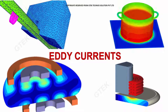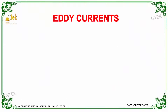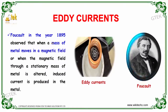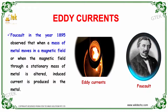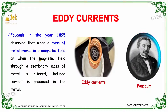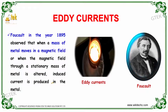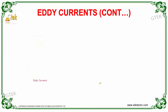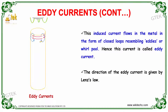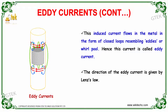Let's talk about Eddy Current. Foucault, a great physicist and scientist, observed in 1895 that when a mass of metal moves in a magnetic field, or when the magnetic field through a stationary mass of metal is altered, an induced current is produced in the metal. That is referred to as Eddy Current. This induced current flows in the metal in the form of a closed loop resembling eddies or whirlpools. Hence, this current is called Eddy Current.